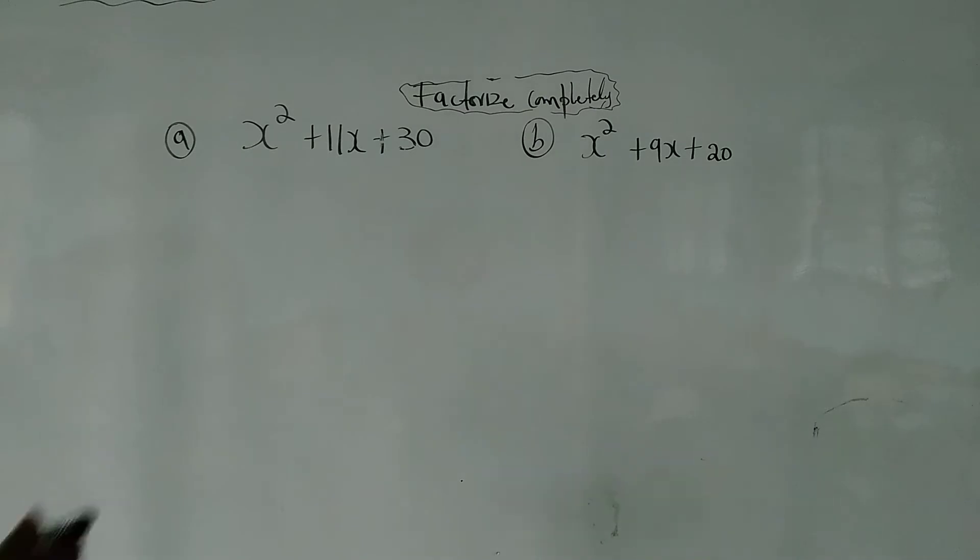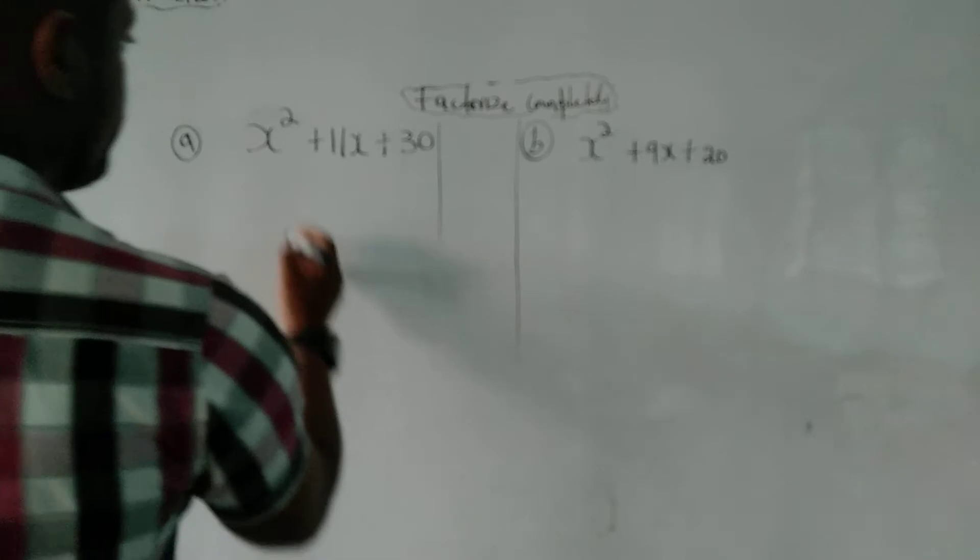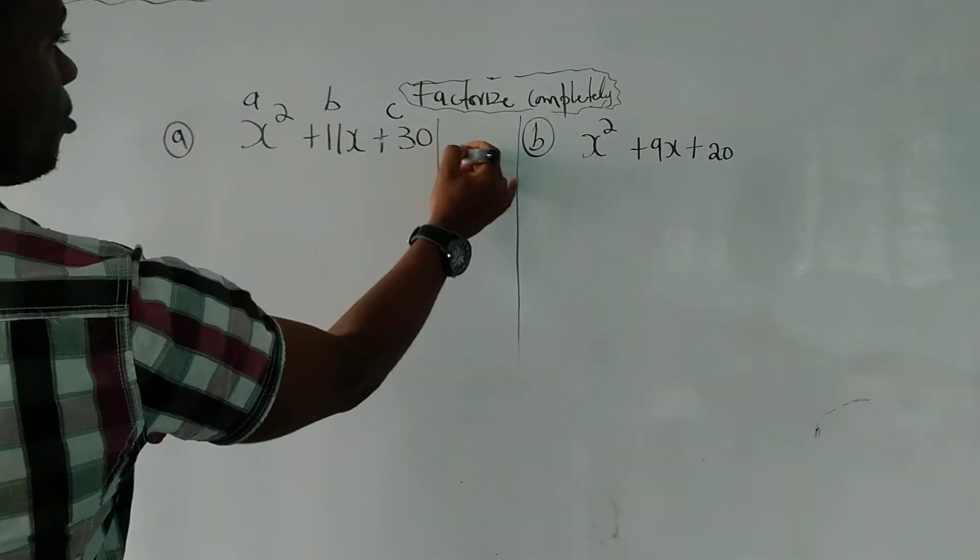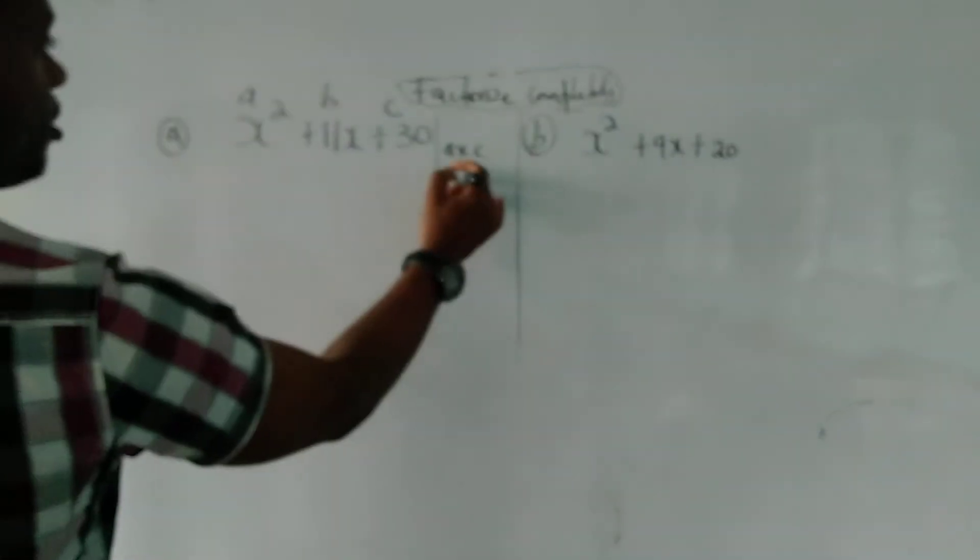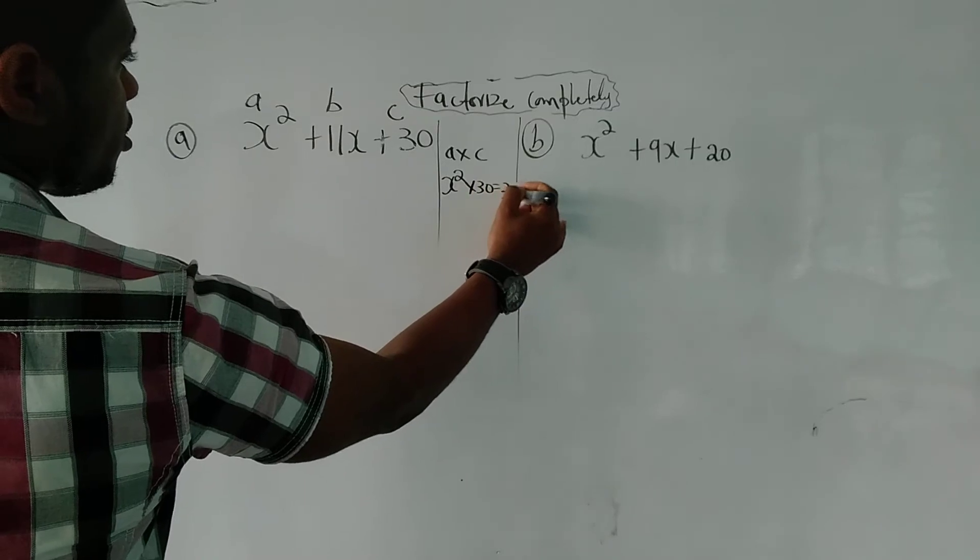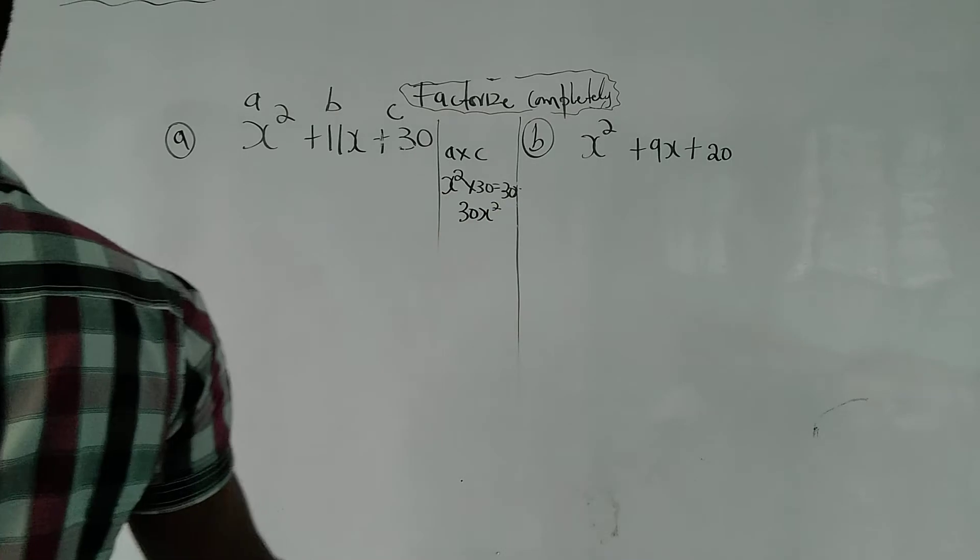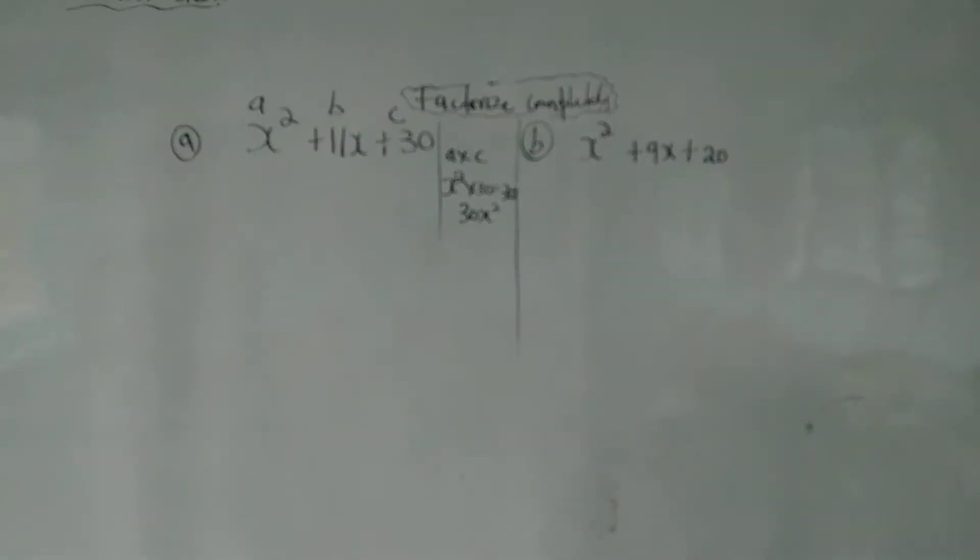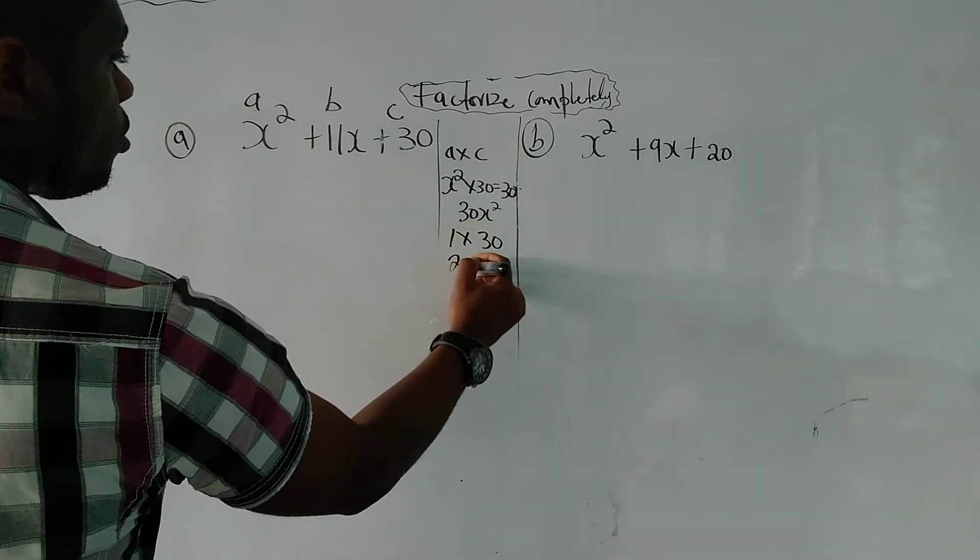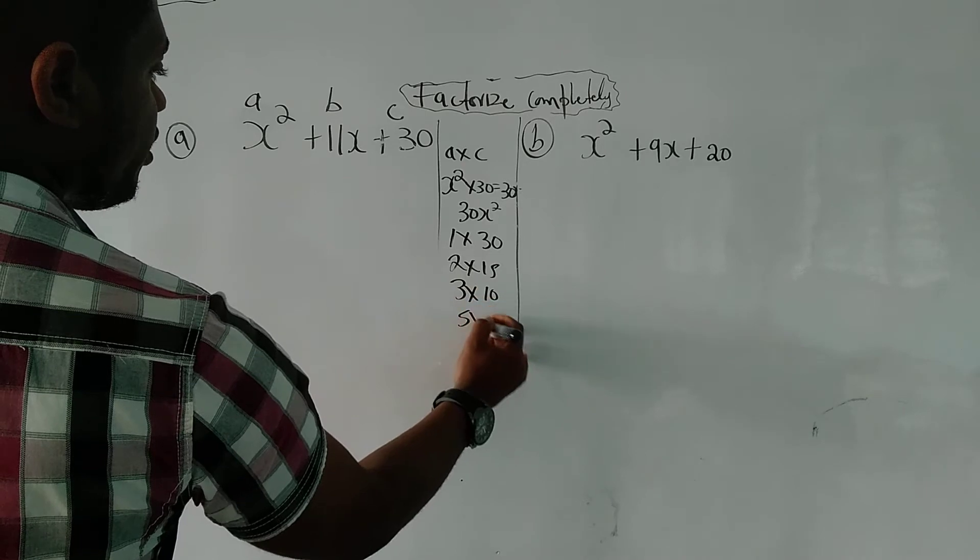As we said, let's have a little row for a part here. First, we will be ABC. So it will be A times C. So multiply A times C, that's x squared times 30, equals 30x squared. When we reach to this table, we will place all the factors of 30, or the product of AC. So 1 times 30, 2 times 15, 3 times 10, and 5 times 6.